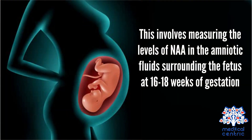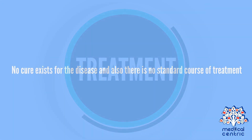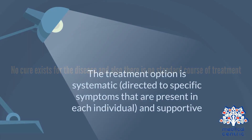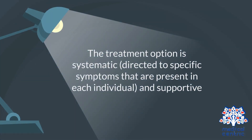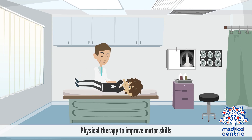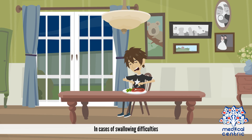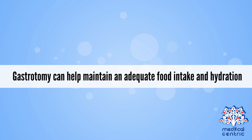Prenatal diagnosis involves measuring the levels of NAA in the amniotic fluid surrounding the fetus at 16 to 18 weeks of gestation. Treatment: No cure exists for the disease, and there is no standard course of treatment. The treatment option is symptomatic, directed to specific symptoms present in each individual, and supportive. This may include physical therapy to improve motor skills, educational programs to help improve communication skills, and anti-epileptic drugs for seizures. In cases of swallowing difficulties, gastrostomy can help maintain adequate food intake and hydration.